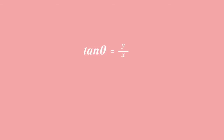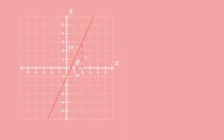By definition, tan theta equals y over x. We calculate the gradient of a straight line graph as the change in y over the change in x. Therefore, to calculate the angle of inclination or slope of a line, we equate the tan of the angle to the gradient of the line. So to work out the angle theta of the line y equals 2x minus 1: